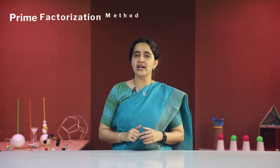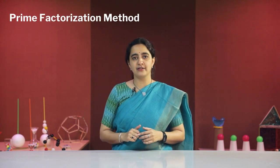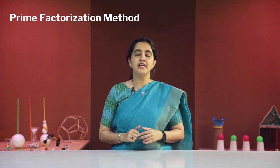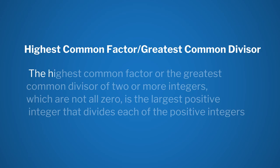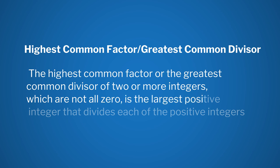First, we will try to understand how to find the HCF using the prime factorization method. But first of all we need to understand what HCF is. The highest common factor or GCD, the greatest common divisor, of two or more integers which are not zero is the largest positive integer that divides each of the positive integers.